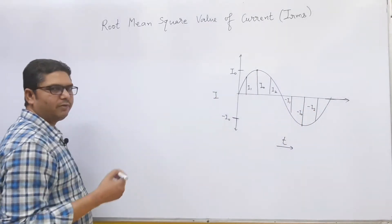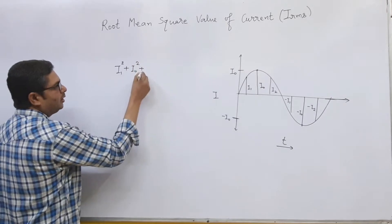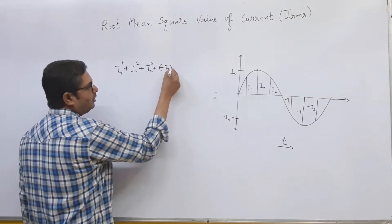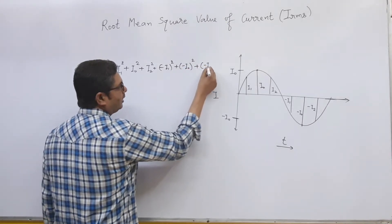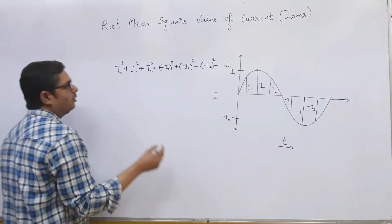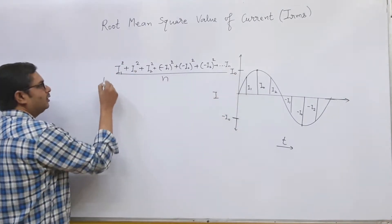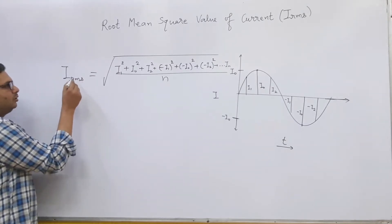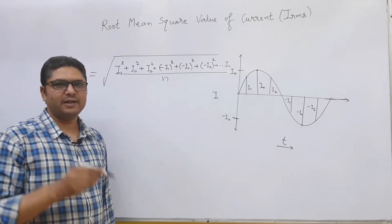What will be the root mean square value of current? It equals the square root of the quantity (I1² + I₀² + I2² + (−I1)² + (−I2)² + … ) divided by N, where N is the number of values. This is marked as I_RMS, also known as virtual current or effective current.